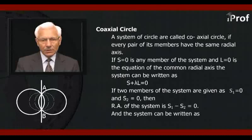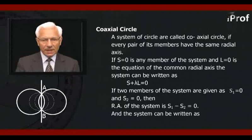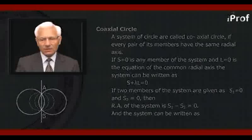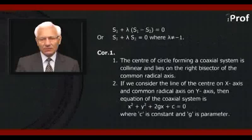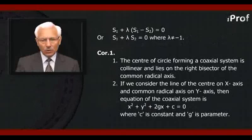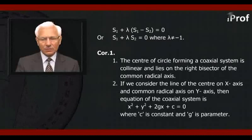However, if two members of the system are given as s₁ = 0 and s₂ = 0, then the radical axis of the system is s₁ - s₂ = 0. The equation of the system can be written as s₁ + λ(s₁ - s₂) = 0, or s₁ + λs₂ = 0, where λ ≠ -1.